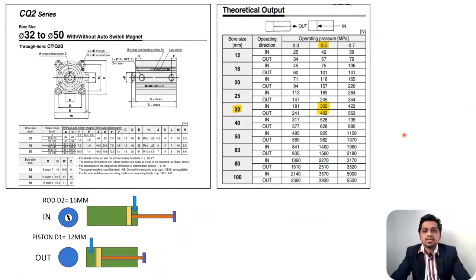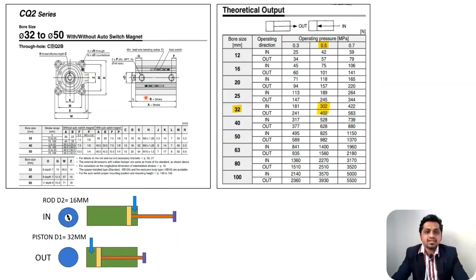Now focusing on the 32 mm bore size, scrolling down in the manual gives the full dimensional details: overall dimensions, tapping sizes, and rod diameter. We also need to understand the two force values — 'in' and 'out' — mentioned in the catalog.